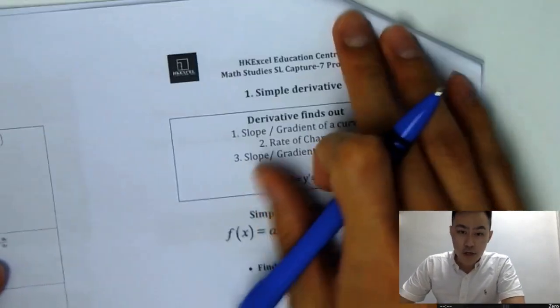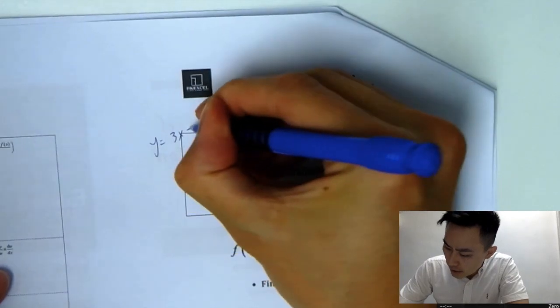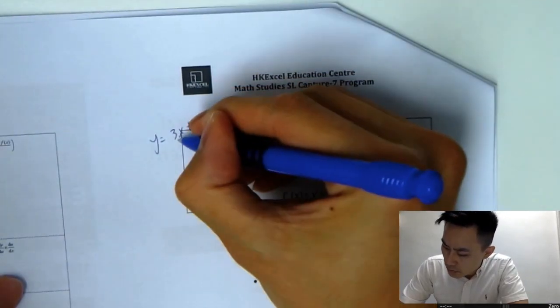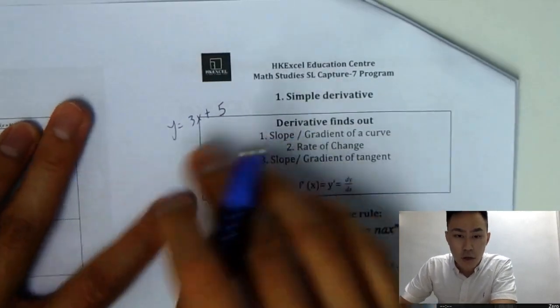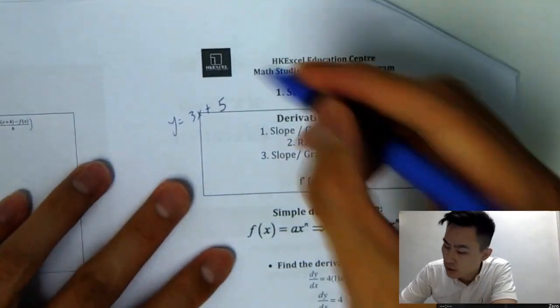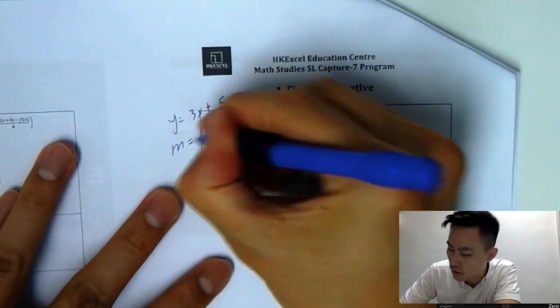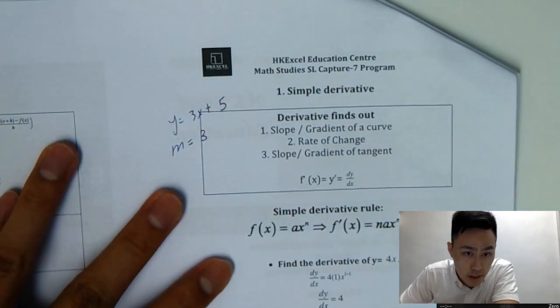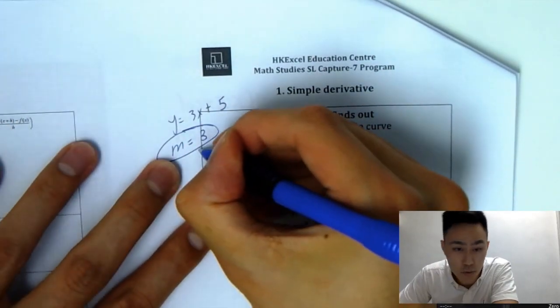So why we need to learn differentiation? Because in the past, we have learned y equals mx plus c, y equals 3x plus 5, for example. So y equals to 3x plus 5. So if I ask you to find a slope of this straight line, we'll be able to tell this m is equal to 3. The slope is equal to 3, right?